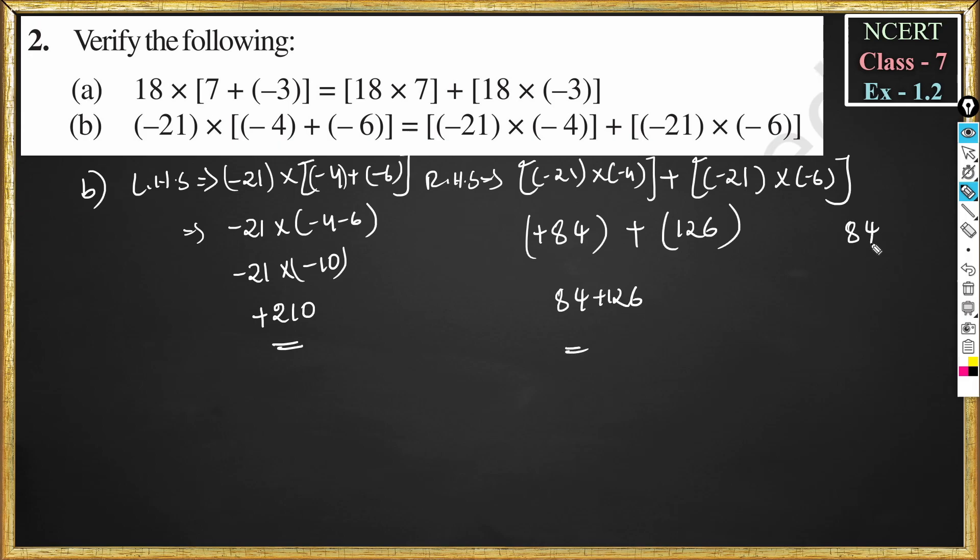So this becomes 84 plus 126. So 84 plus 126, 6 plus 4 is 10, 3 plus 8 is 11, 1 plus 1 is 2. So this becomes 210.